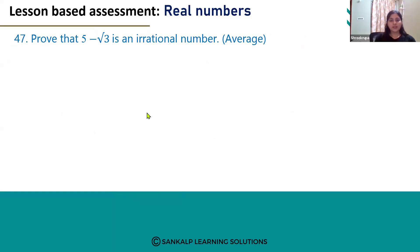Hello everyone! Let's see question number 47. Prove that 5 minus root 3 is an irrational number. Let's prove this by taking the contradiction of this statement.